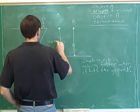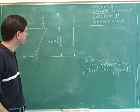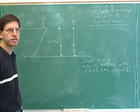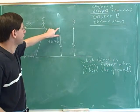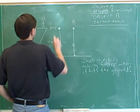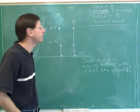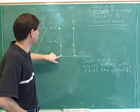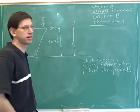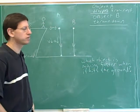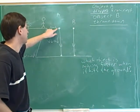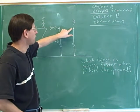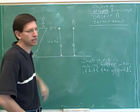For both of these objects, the velocity is pointing down and the acceleration is down from gravity. We know that when the acceleration is parallel to the velocity, you're speeding up. So both of these objects are going to be speeding up. But object A is speeding up from rest — from zero meters per second. Object B didn't start from rest, so however fast object A ends up moving when it hits the ground, object B is going to be moving faster because it started at a greater speed, and then gravity is going to make it go even faster.